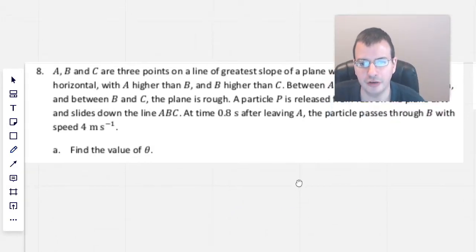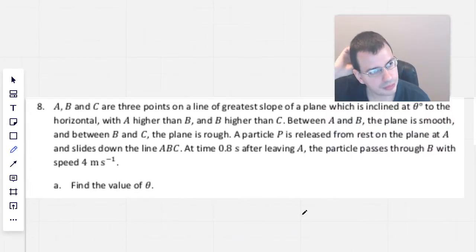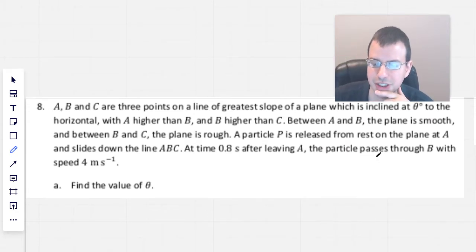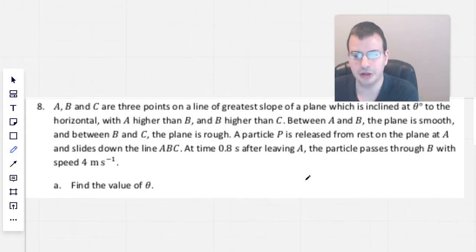A, B, and C are three points on a line of greatest slope of a plane which is inclined at theta to the horizontal, with A higher than B, and B higher than C. Between A and B the plane is smooth, and between B and C the plane is rough.